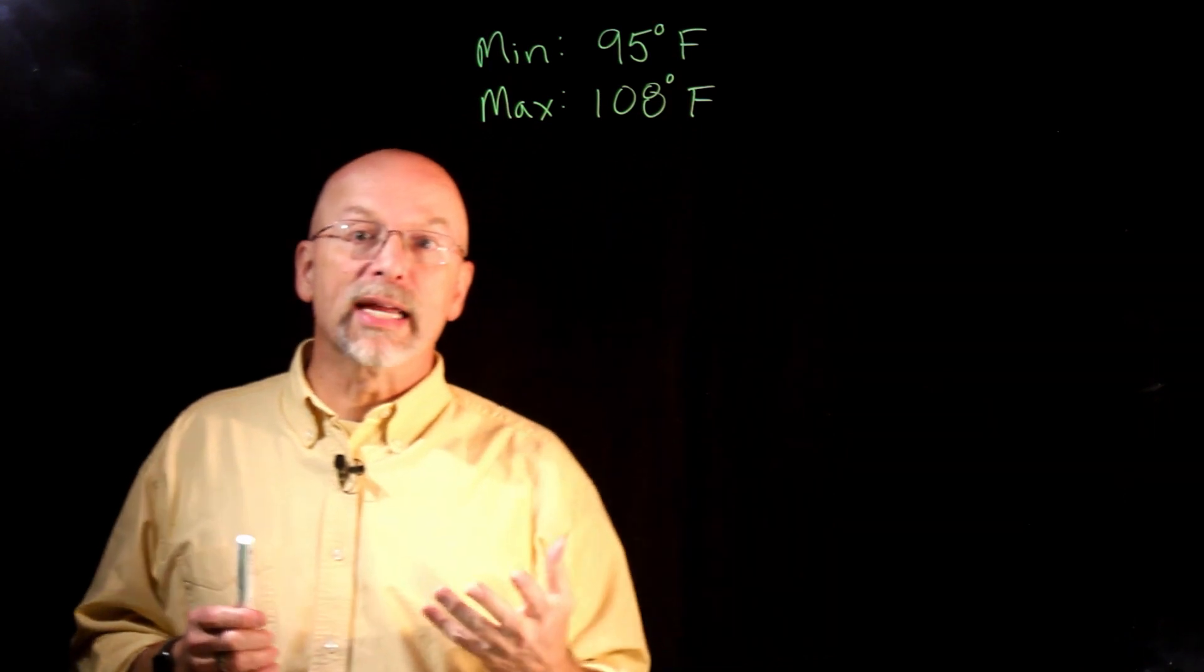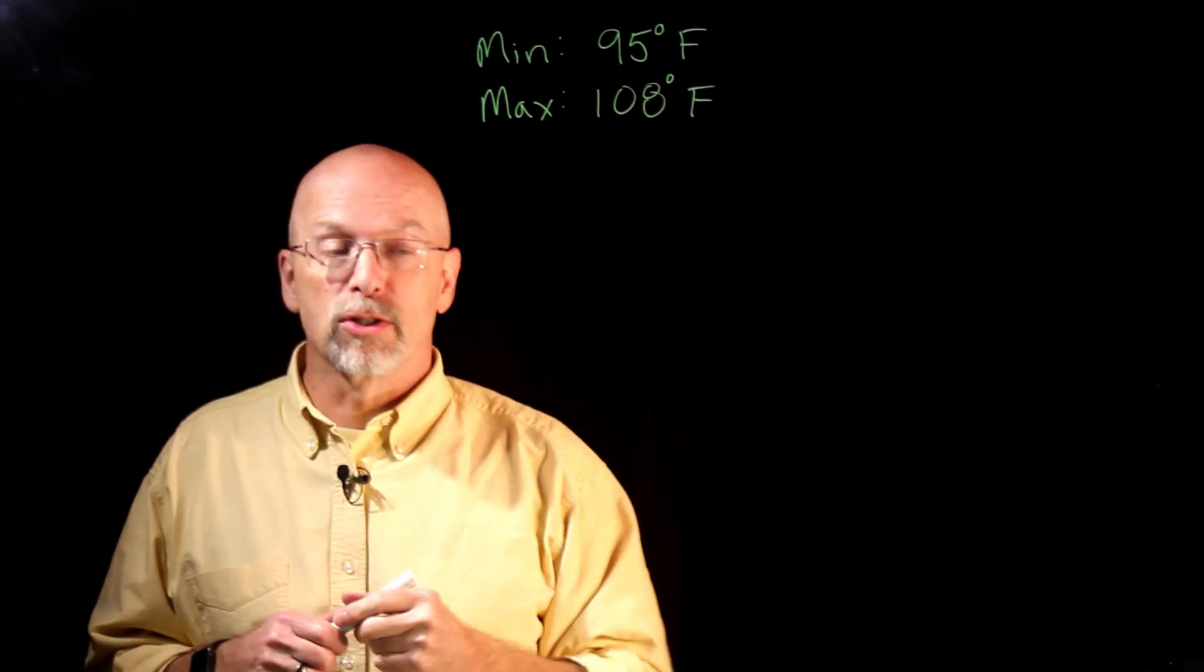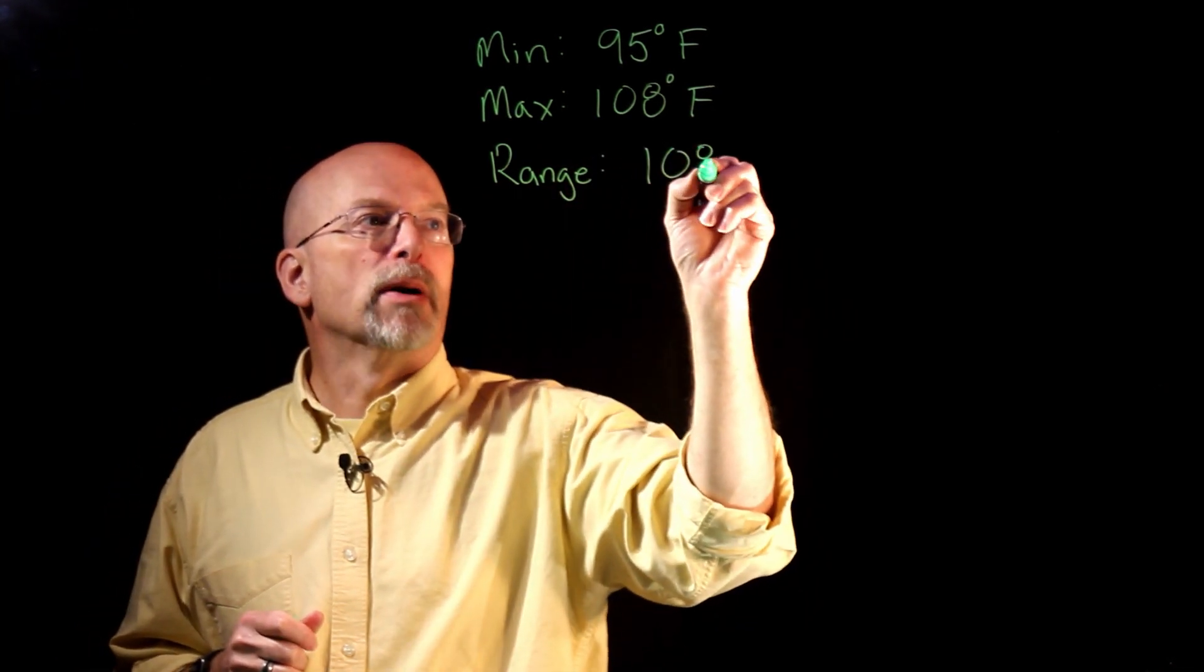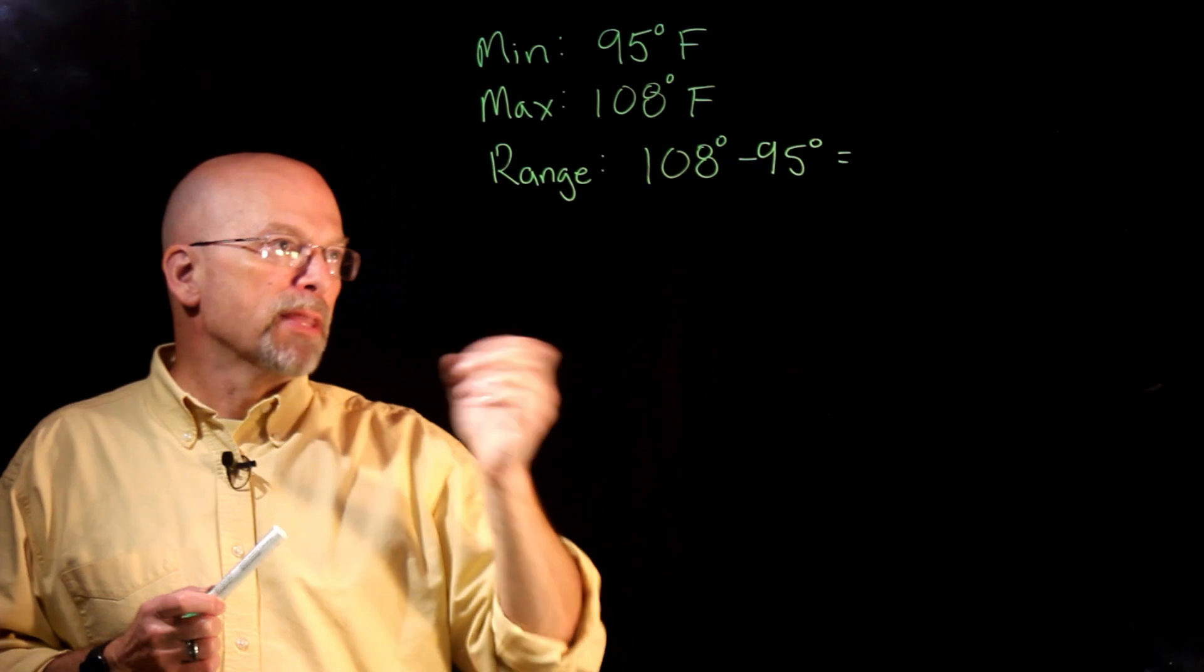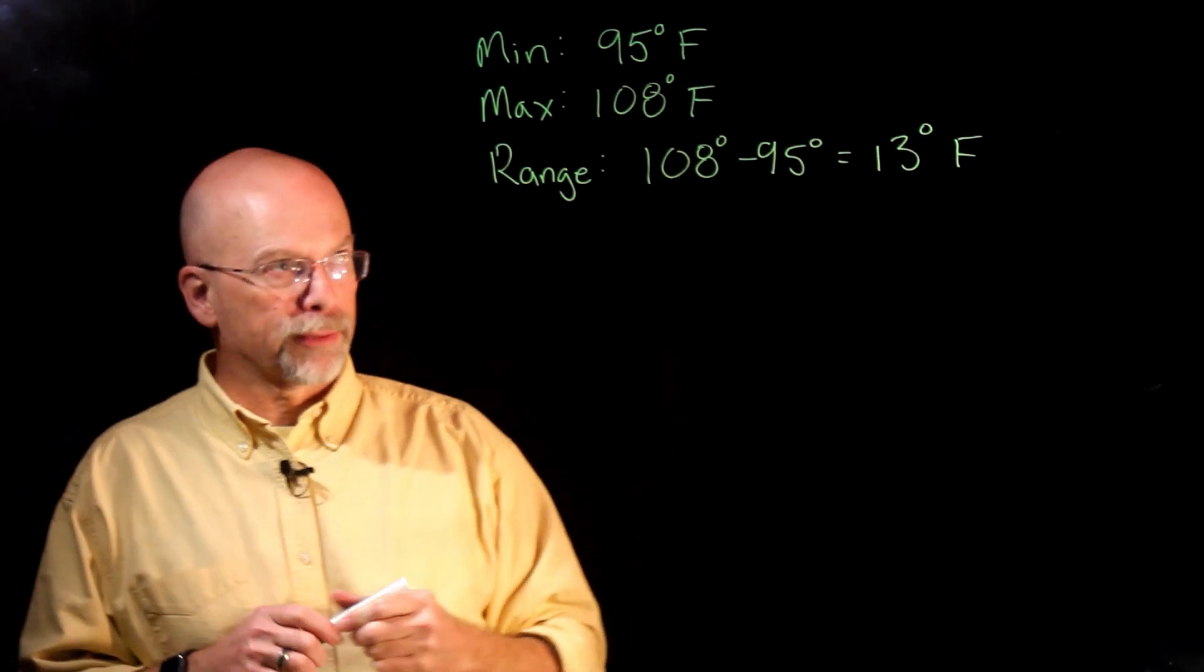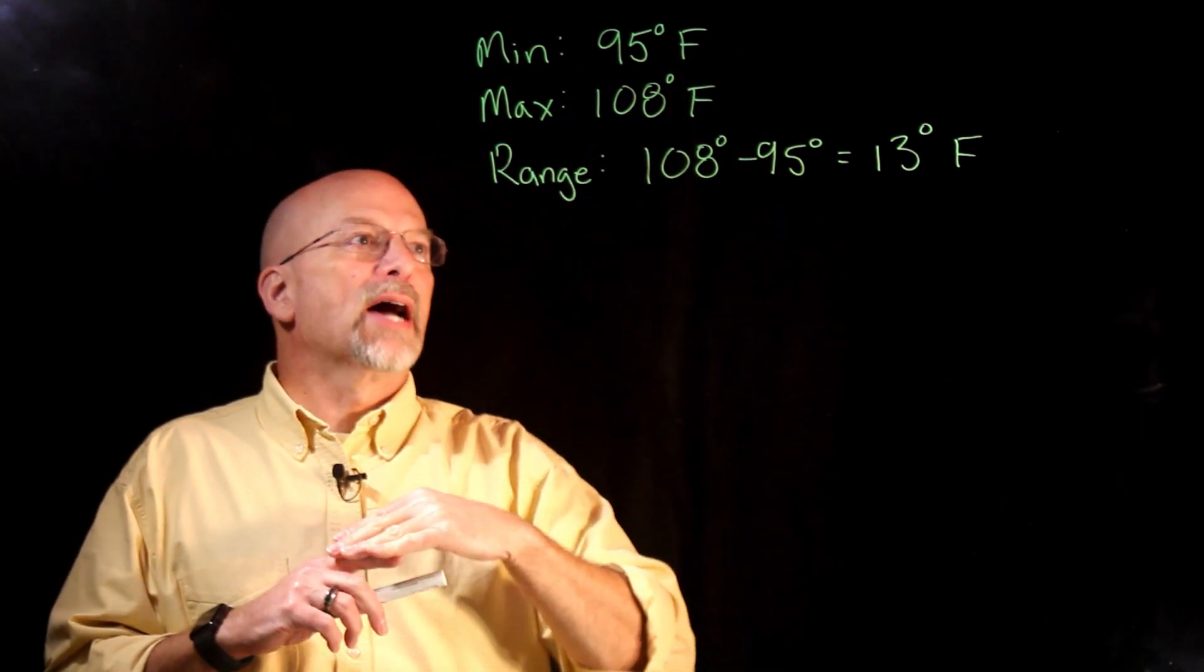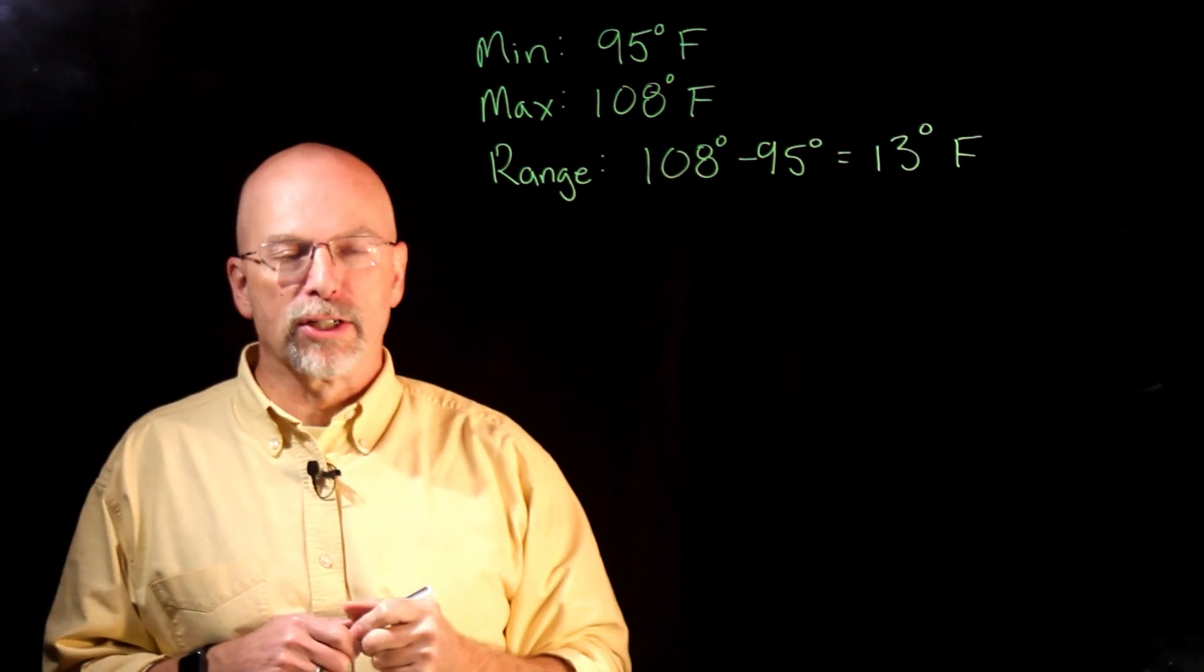It's important to understand the range because we need to know that one of these corresponds to the all zeros condition, and one of these corresponds to the all ones condition. Our range is equal to the maximum, 108 degrees, minus the minimum, 95 degrees. This is going to give us 13 degrees Fahrenheit as our range. So this is our base or our minimum, and we are going to count up to the point where we reach a range of 13 degrees.